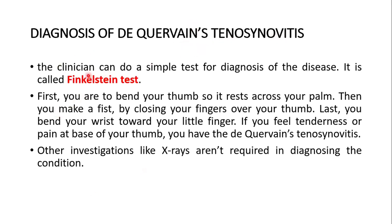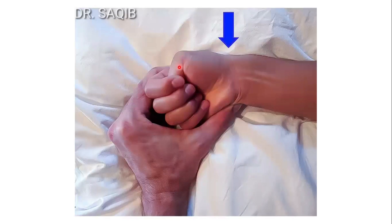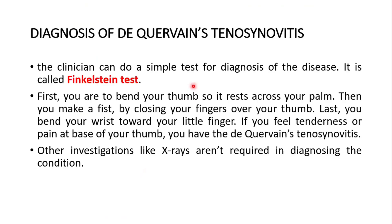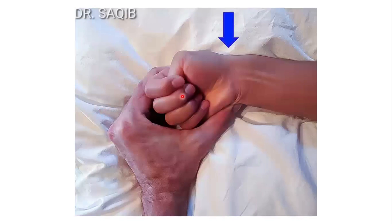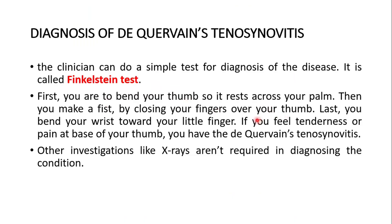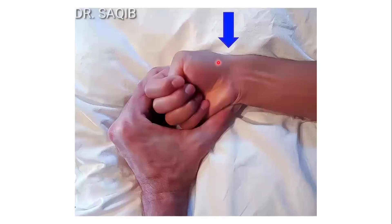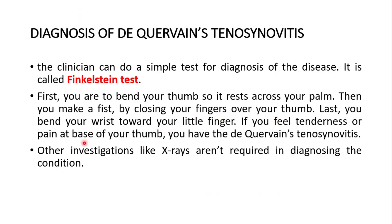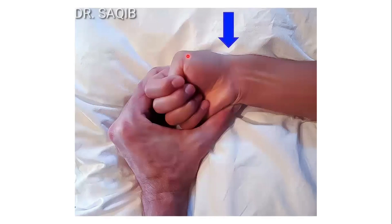The clinician can do a simple test for diagnosis — the Finkelstein test. First, bend your thumb so it rests across your palm. Then make a fist by closing your fingers over your thumb. Last, bend your wrist towards your little finger. If you feel tenderness or pain at the base of your thumb, you have De Quervain's tenosynovitis. Pain or tenderness at the base of the thumb confirms the diagnosis.